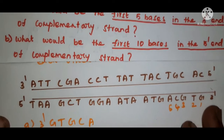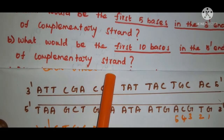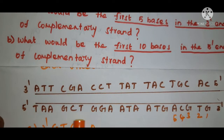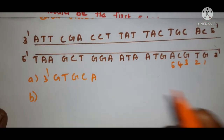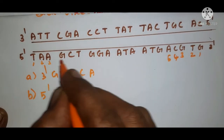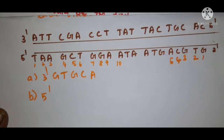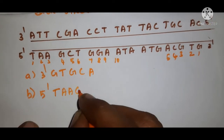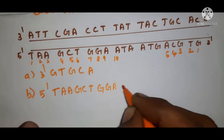The second question asks what would be the first 10 bases at the 5' end of the complementary strand. From the 5' end you write up to 10 bases. The answer is: 5' — A, A, G, C, T, G, G, A, A — that is the first 10 bases at the 5' end.